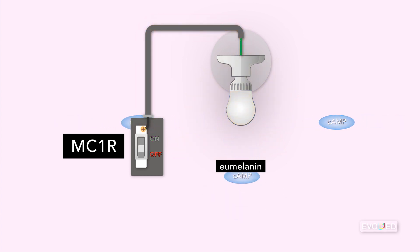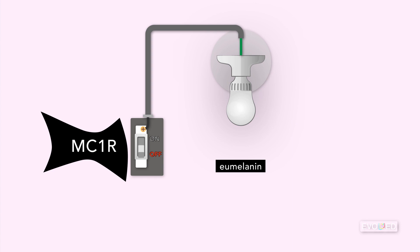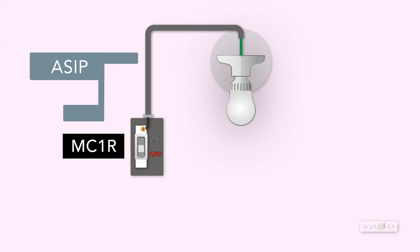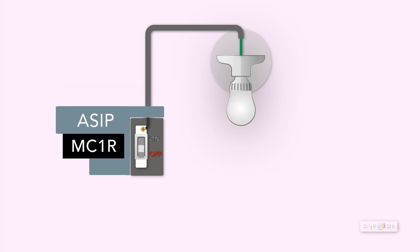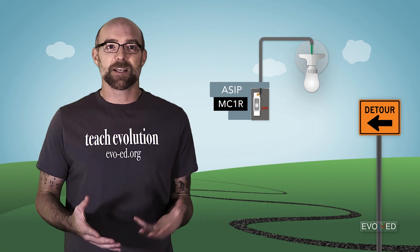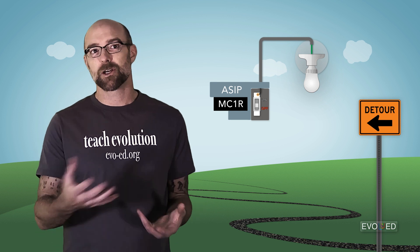If there's a mutation in the MC1R gene that changes the shape of the MC1R protein, it could impact how easily or how difficult it is for the MC1R light switch to be flipped, and thus how much cyclic AMP is produced. In addition, there's another protein called the agouti signaling protein, or ASIP, that's produced and exported from cells. If ASIP binds to the MC1R protein, it can prevent MC1R from signaling for cyclic AMP production. So we've introduced two more genes and their respective proteins into the story: MC1R and agouti, or ASIP.